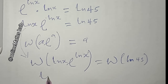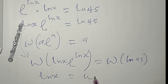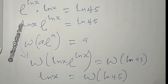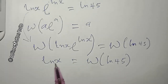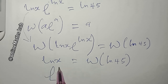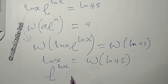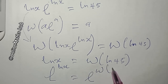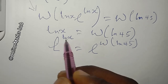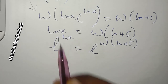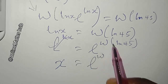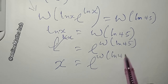The left-hand side collapses to ln(x), giving us: ln(x) = W(ln(45)). Taking the exponential of both sides to remove the natural log, we get: x = e^(W(ln(45))).